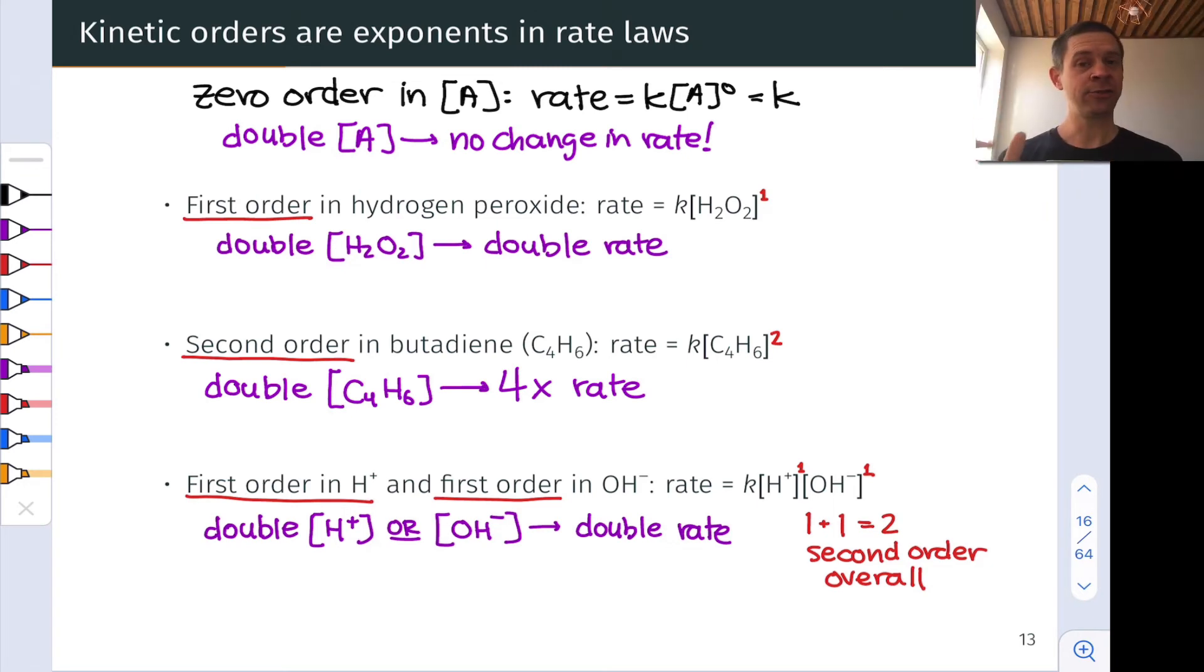As an exercise for you, consider what happens if we double both the concentrations of H+ and OH-. How will the reaction rate change in that case? What if we double one of the concentrations but cut the other one in half at the same time? How will the reaction rate be affected?